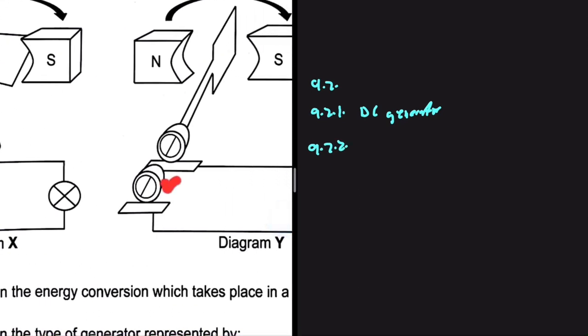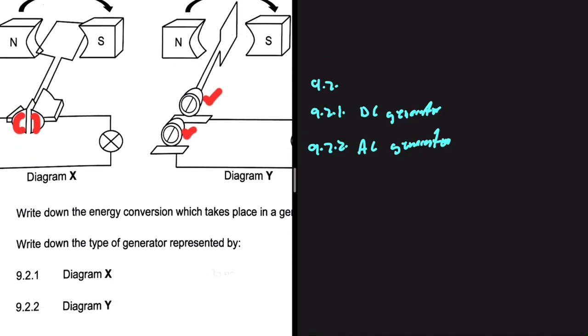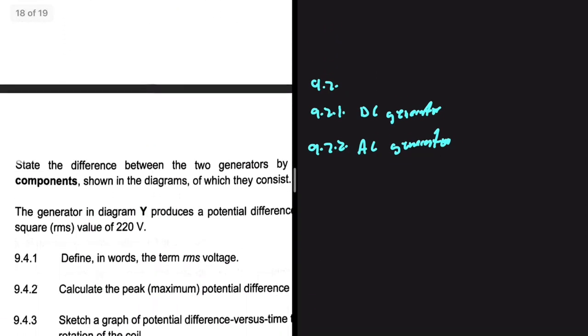Question 9.2.2: we have slip rings, and that is a component which we find on an AC generator or an AC motor. The presence of slip rings indicates AC generator, while in DC generator it is split rings. There's a difference between the two.